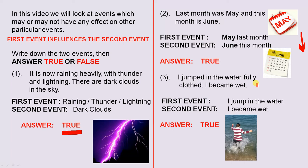Number 3: I jumped in the water fully clothed, I became wet. First event: I jump in the water. Second event: I became wet. And that is true. You can see, if you've got your clothes on and you jump in the water, you will become wet. So there are three examples where the first event has an influence on the second event.